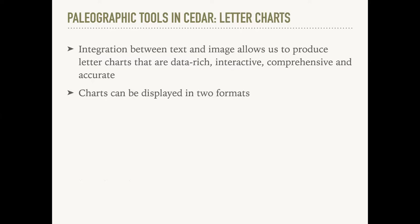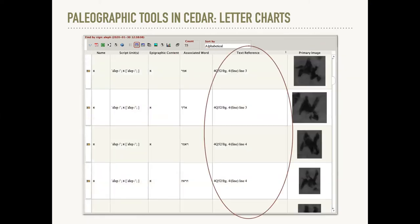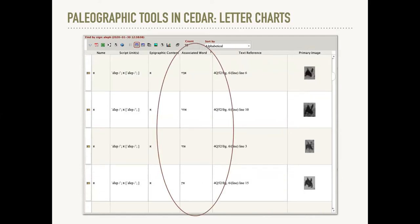The integration we've created between text and image allows us to produce letter charts that are data-rich, interactive, comprehensive, and accurate. These charts can be displayed in two different formats and can draw from a single manuscript or multiple manuscripts. Here is one format showing Alephs drawn from a single manuscript, 4Q52, also known as 4Q Samuel B. This chart displays every Aleph that I've hotspotted in 4Q52, along with its location in the manuscript by fragment and line number, and the word it belongs to. The table can be sorted by column — by location to see all characters in each fragment group together, or by word to see all word-initial Alephs first. This format is particularly useful when you want quick access to information about the context of the character, for example, if you're looking at how a scribe's hand changes in different contexts.